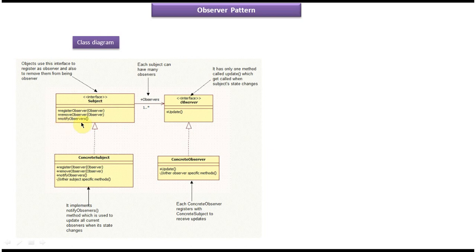The third method is notify observers. This method is used whenever any state change happens in the subject — the subject will notify all the observers by calling the update method. So what notify observers does is: suppose there are five observers registered in the subject, it will iterate through that list of observers, get each observer object one by one, and call the update method. This is how it sends notifications to the observers.